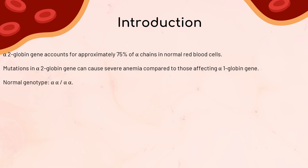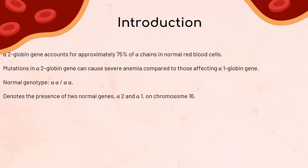Let's talk about the normal alpha-globin gene complex, which we denote as alpha-alpha. This term indicates the presence of two normal genes, alpha-2 and alpha-1, on one chromosome 16. So a normal genotype is alpha-alpha / alpha-alpha.